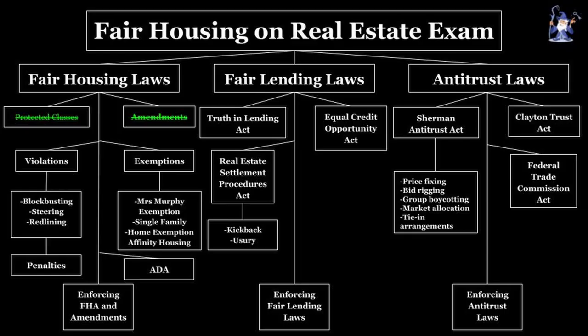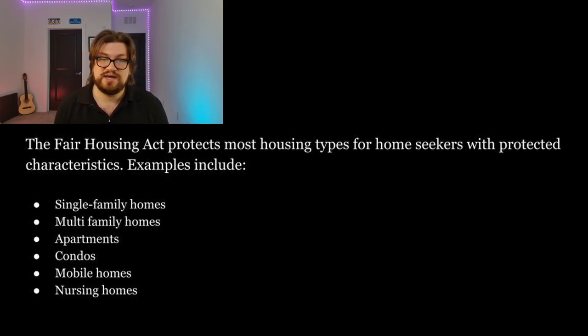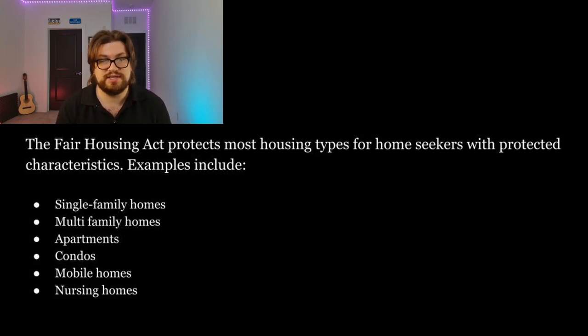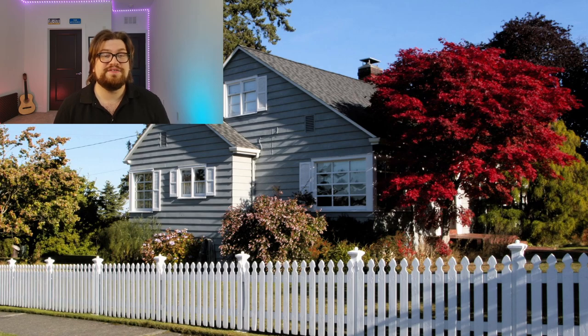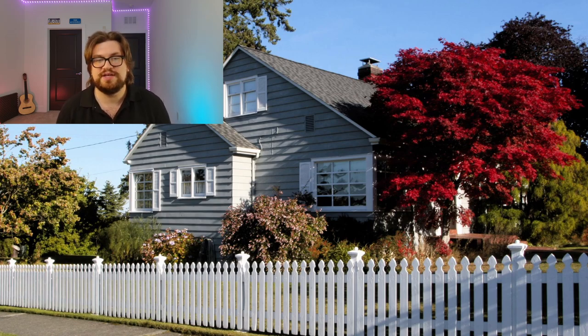Now that we've covered the Fair Housing Act, its amendments, and protected classes, we have to talk about what the FHA specifically covers. The Fair Housing Act protects most housing types for home seekers with protected characteristics. These examples would include single-family homes, multifamily homes, apartments, condos, mobile homes, and even nursing homes. Essentially, if a property constitutes a dwelling or place of residence, there's a strong chance that interested buyers and renters are protected under the FHA.